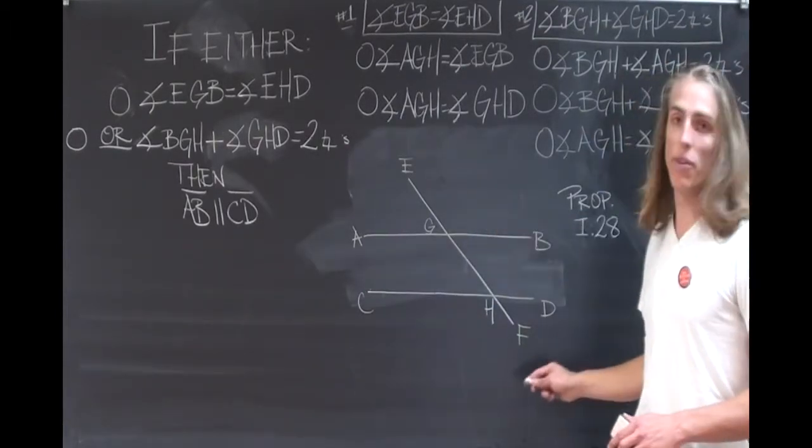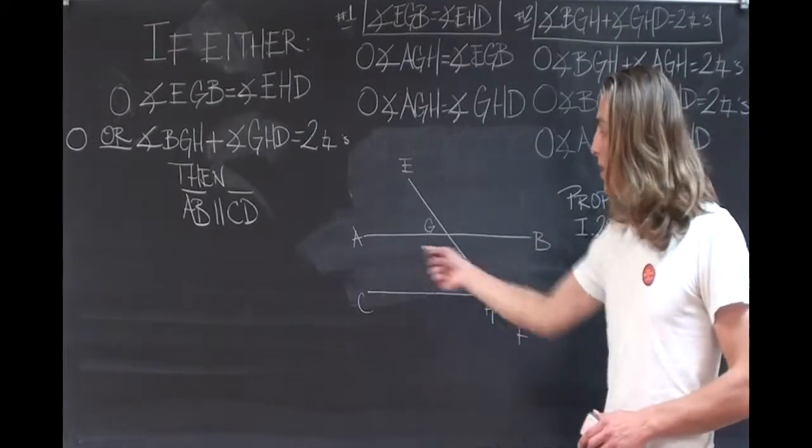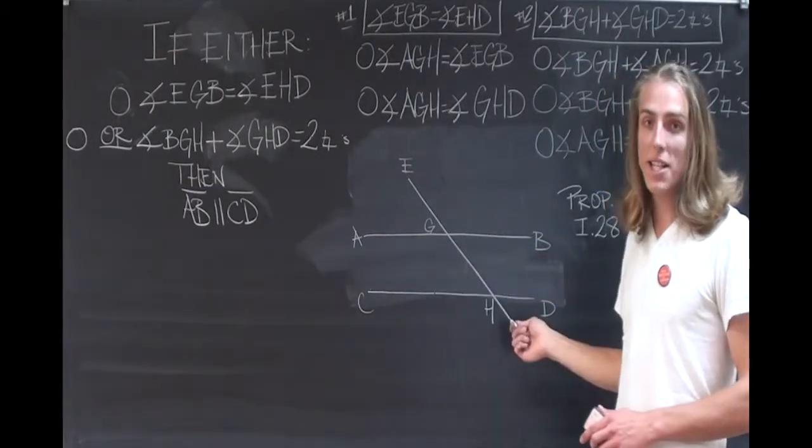If a straight line, EF, falls upon two straight lines, AB and CD,